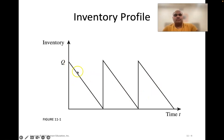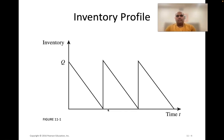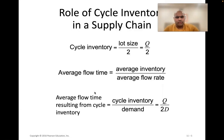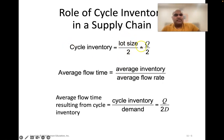This is the usual inventory profile for these situations. In reality, things don't happen in a straight line — you don't sell exactly, say, 10 boxes of salt per day. Some days you sell more, some days less, but this is on average what's happening in the system.